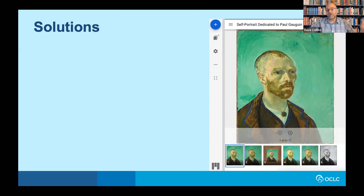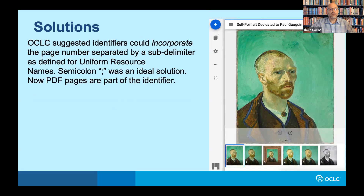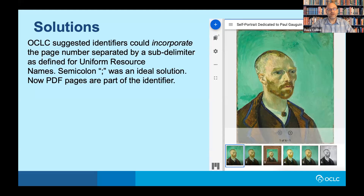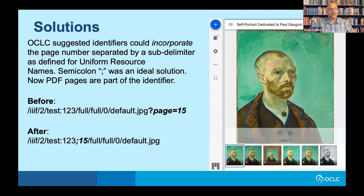So what was the solution? We went to the Cantaloupe team and discussed alternatives. What we suggested was incorporating the page number as a sub-delimiter of the identifier in the IIIF URI — this is a common practice for uniform resource names. Semicolon was an ideal solution; in Cantaloupe you can decide what delimiter to use, so if you have semicolons in your identifiers already, you can define a different one. So you went from something like "?page=15" to ";15" in the URI. The benefit is that this is now a standard IIIF URI, and it works in Mirador.